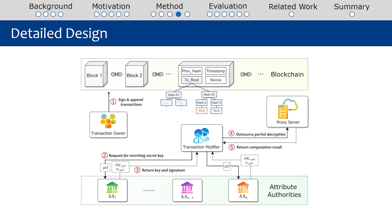Next, in order to reduce the computational overhead, the modifier outsources partial decryption to the proxy server and subsequently receives the computation results. During this stage, the computation to decrypt the chameleon trapdoor is separated into two phases and partially outsourced. Therefore, the computational burden on the user side is significantly reduced. Finally, the modifier finds a hash collision to perform rewriting, and then signs the obtained transaction so other entities can verify its validity.